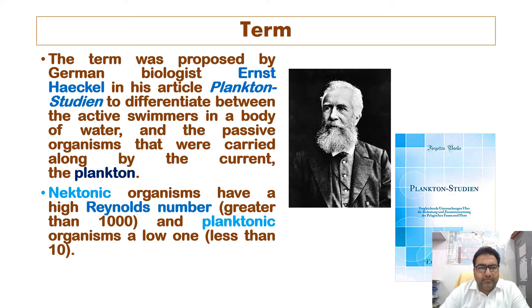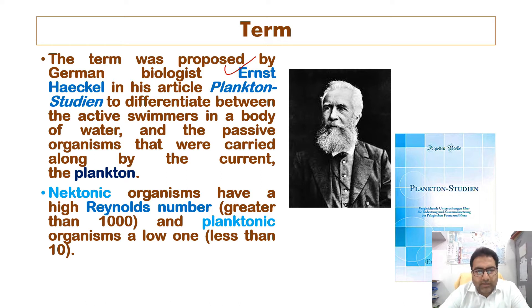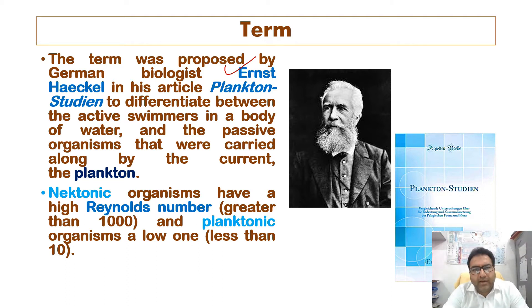The term nekton was proposed by German biologist Ernst Haeckel in his article 'Plankton Studium,' to differentiate between the active swimmers in a body of water and the passive organisms carried along by the current — that is, plankton. As a guideline, nektonic organisms have a high Reynolds number, which is greater than 1,000.